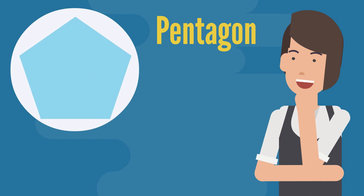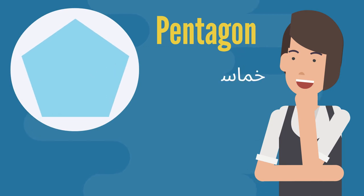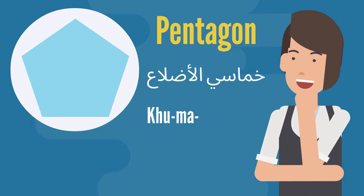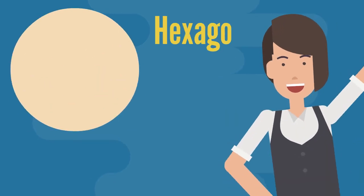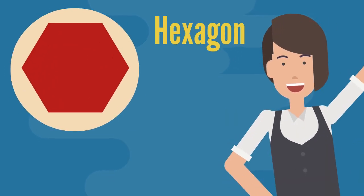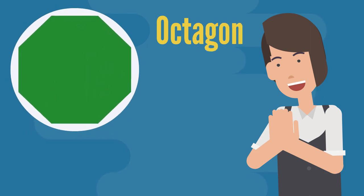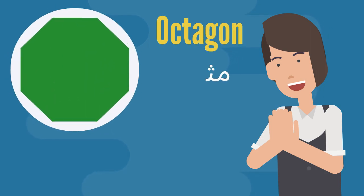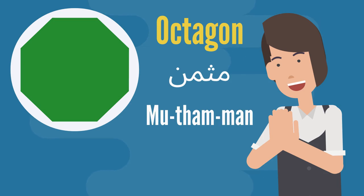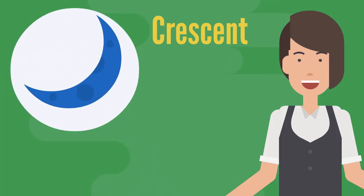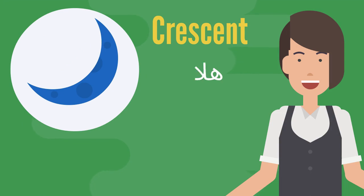Pentagon — خماسي الأضلاع. Hexagon — سداسي. Octagon — مثمن. Crescent — هلال.